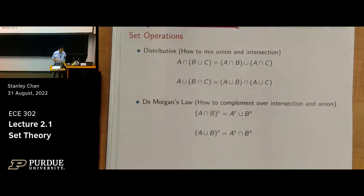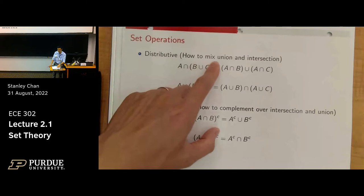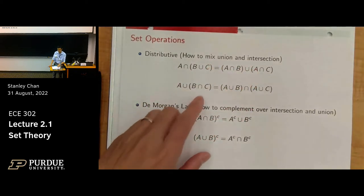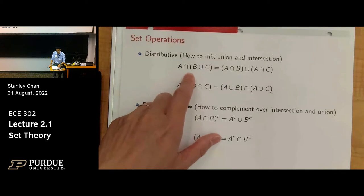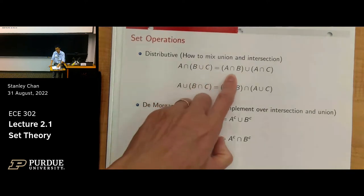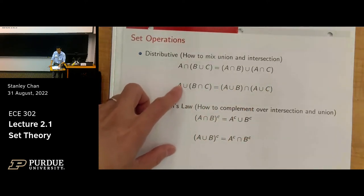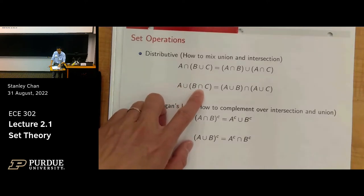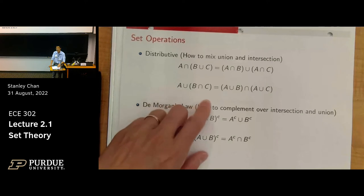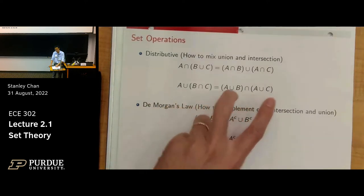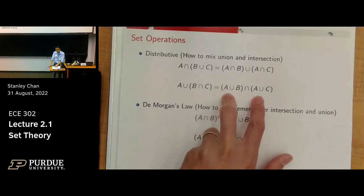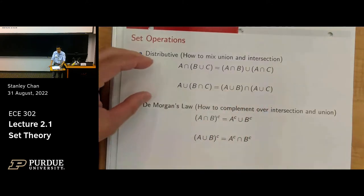The next two operations are more interesting — the distributive property, which is about how you mix union and intersection. The first identity says that A intersect (B union C) equals (A intersect B) union (A intersect C). You can also flip the order: (B intersect C) union A equals (A union B) intersect (A union C). This is called the distributive property.